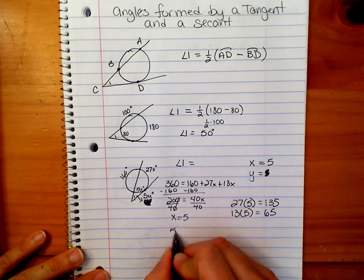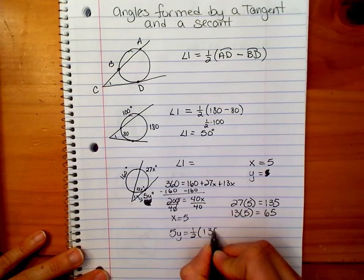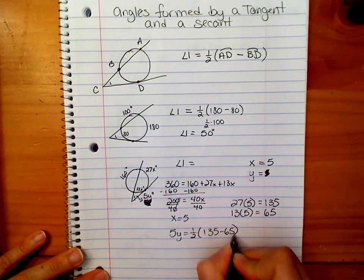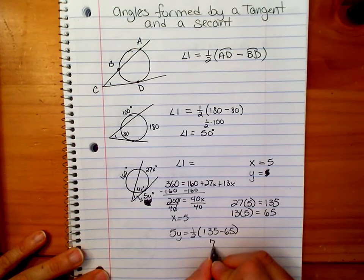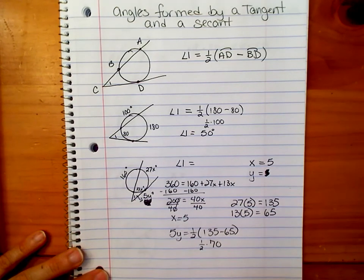So our formula says that the angle is equal to one half the two arcs subtracted. Well, 135 minus 65 is 70. So we're looking for one half of 70. One half of 70 is 35.